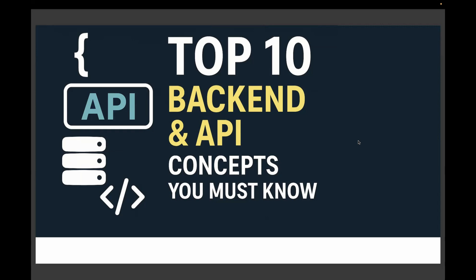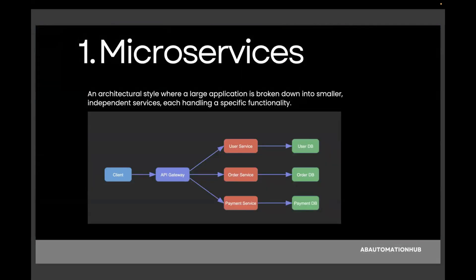The first topic in the list is microservices. It's an architecture style where a large application is broken into smaller, independent services, each handling a specific functionality. Instead of building one monolithic application that handles users, orders, payment, and inventory all in one codebase, you create separate services for each of them.